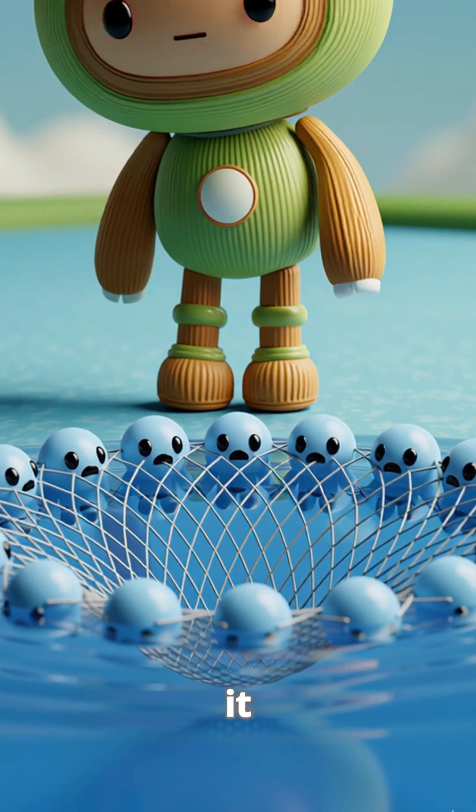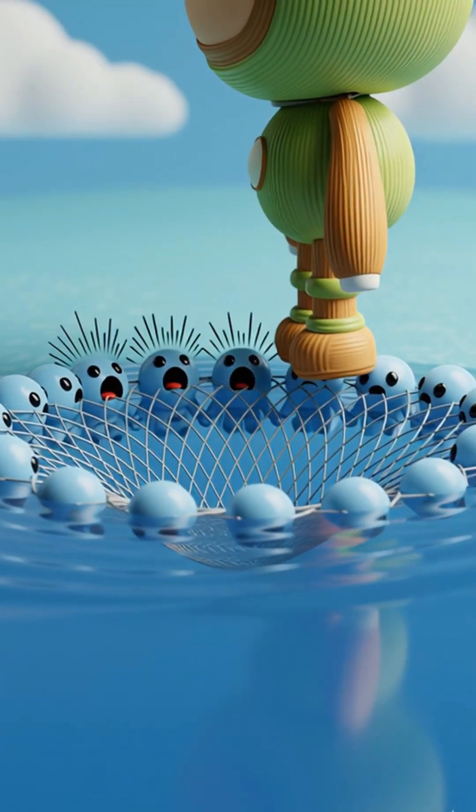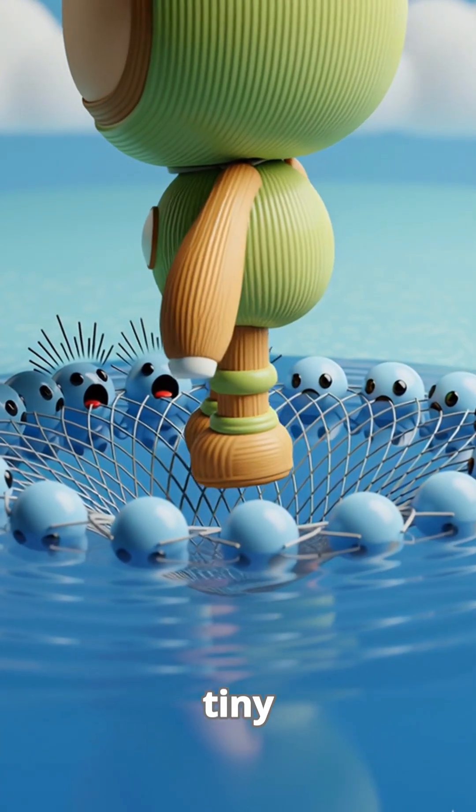when the tiny insect steps on, it doesn't break the bond. Instead, the surface dimples slightly, creating a tiny dent.